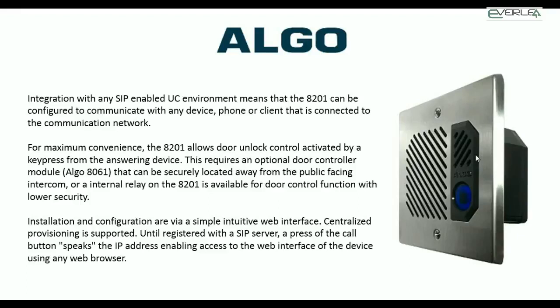The 8201 can be set up in a number of ways. It can work as a standalone unit with its own onboard relay control and even a door sensor to detect if the door is open or closed. It can also integrate with the Elgo 8061 controller unit, which is useful for more secure environments where the relay is kept separate from the intercom unit itself, preventing anyone who breaks into the phone from shorting the wiring. Some building environments demand this; others don't — so there's flexibility.